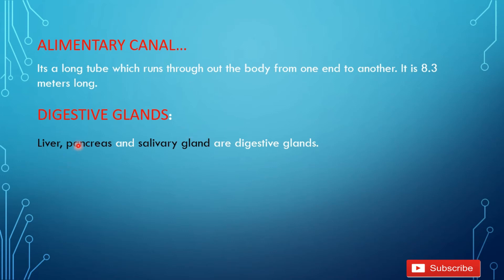The digestive glands — what are they? Digestive glands are chemical secretions which help in digestion. There are three main glands: liver, pancreas, and salivary glands.